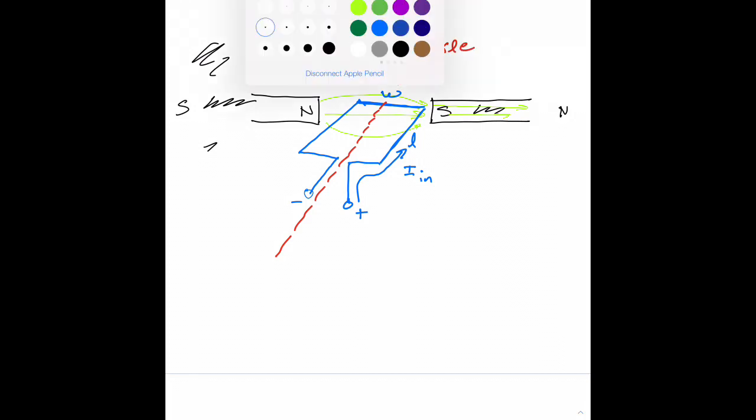So based on the right-hand rule, you have a current that's going into the page, and it's in a magnetic field that points to the right. So point your fingers to the right, point your thumb into the page, and you get a force that points downward. Then the current is going to flow this way, but now it's anti-parallel to the magnetic field, so there's no force in the segment of wire that has width W.